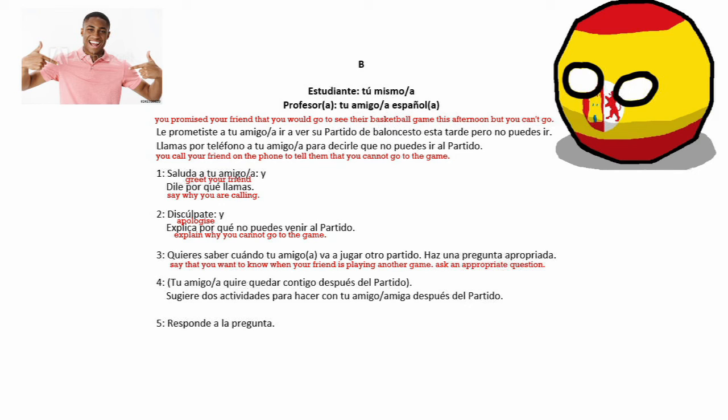You're then told that your friend wants to stay with you after the game, and you have to suggest two activities you can do together. For example: 'Después del partido podemos ir al parque para jugar al fútbol o podemos ir al cine para ver una película' — after the game we can go to the park to play football or we can go to the cinema to watch a film. After this, you have to respond to a question that you do not know in advance, so it has to be off the cuff.